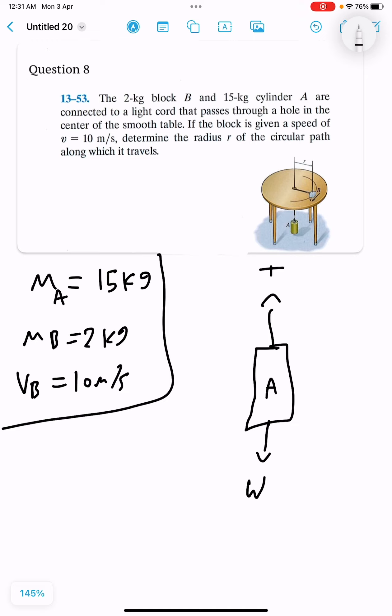So I will use equilibrium. Sum of Fy equals m*ay, so we have wA minus tension equals mA*ay.